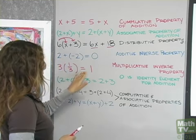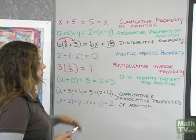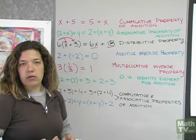3 times 1 third equals 1. The multiplicative inverse property. If you were to multiply 3 times 1 third, you get 3 over 3. 3 over 3 equals 1.